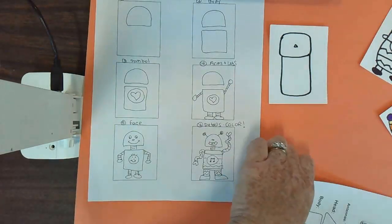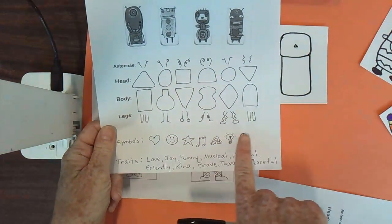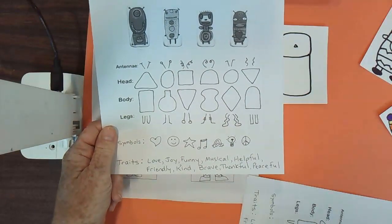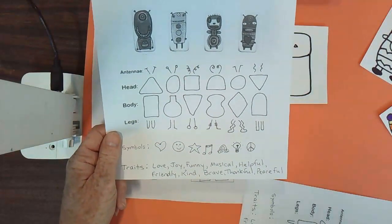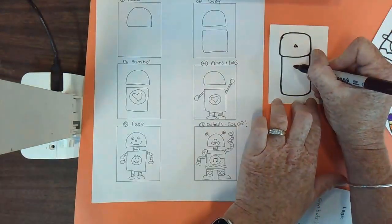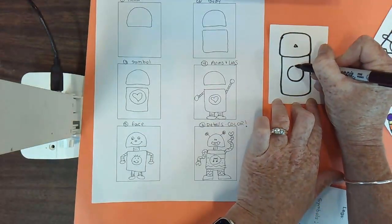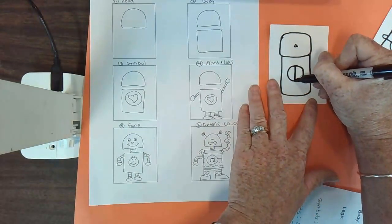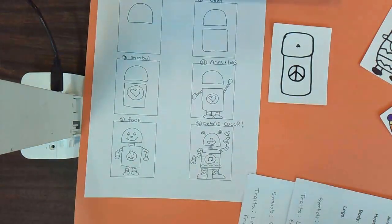You could make any of the ones we talked about. There were a list of some symbols on here. You could think of your own symbol. I think maybe I'll make a peaceful bot. So I'm going to make a peace sign in the center. There are other ways you could show peace. You can make whatever type of a symbol you would like.